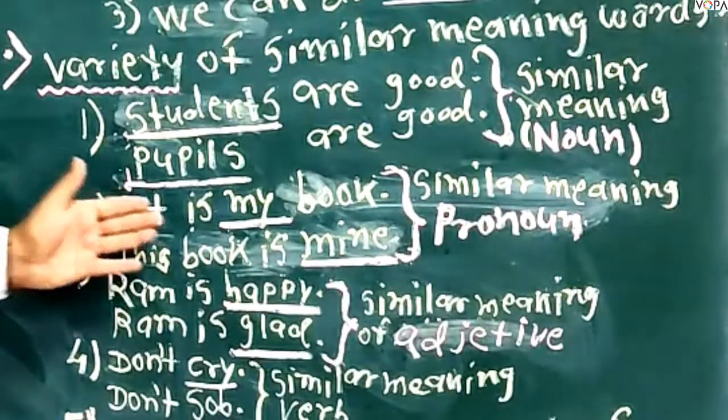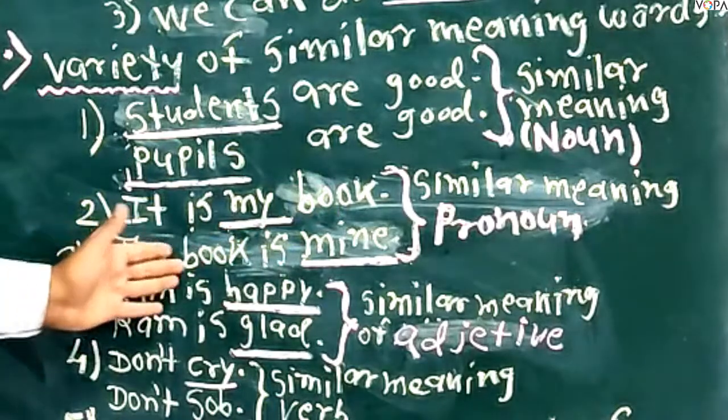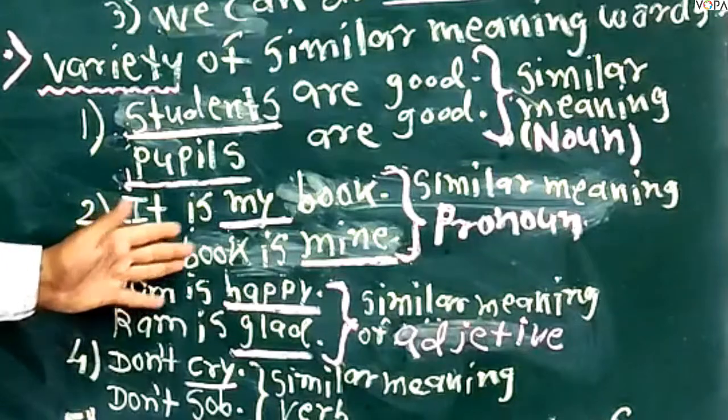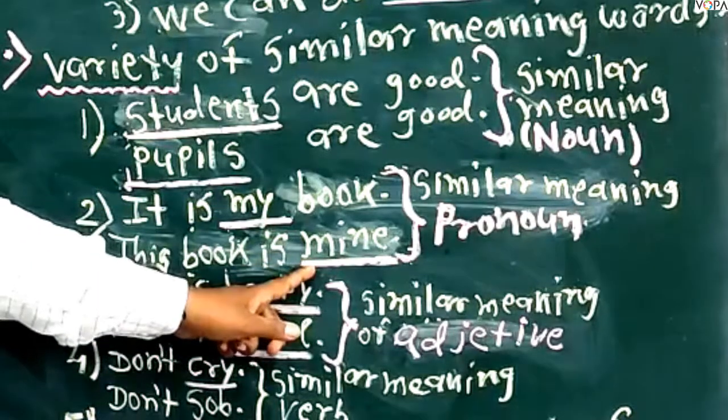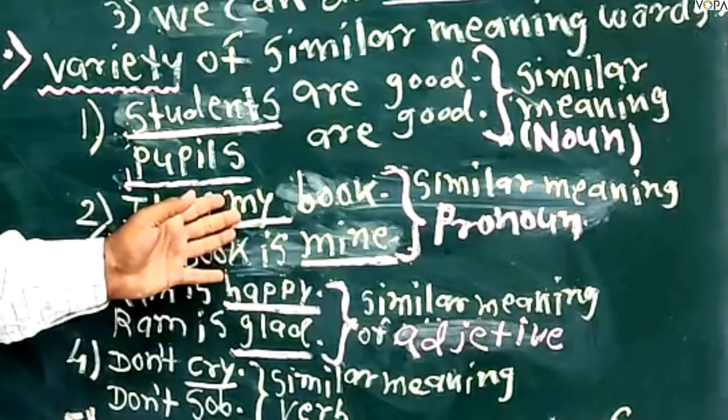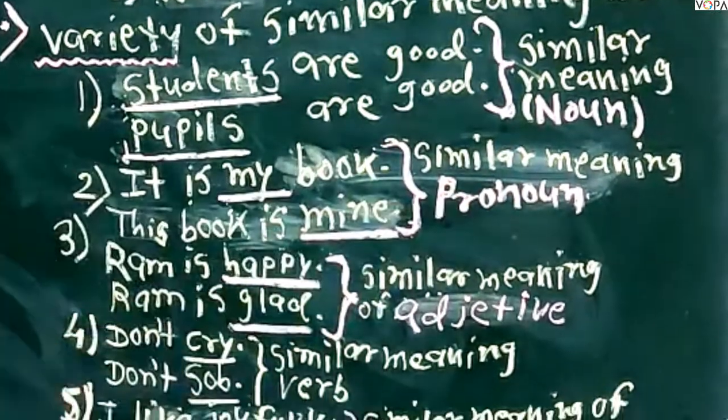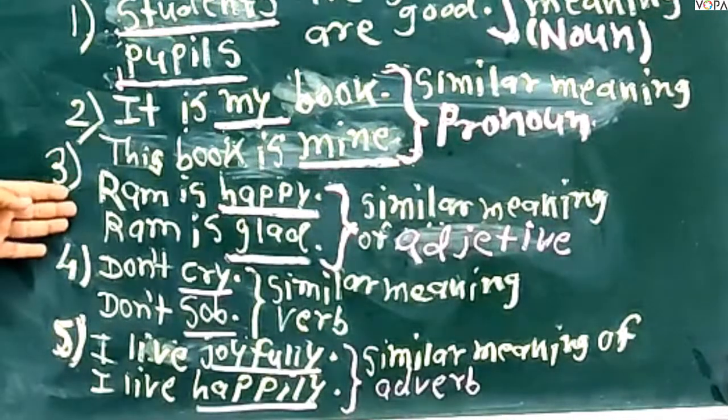Look at the second example. It is my book. This book is mine. 'Te pustak maza ahe'. In these two sentences, my and mine are pronouns, and these are similar meaning words. So we can say this is the example of similar meaning pronouns.